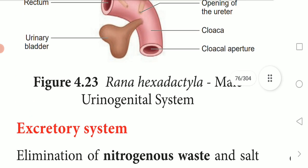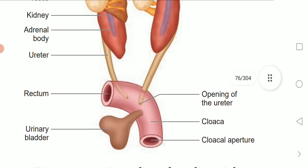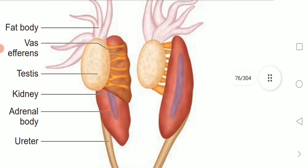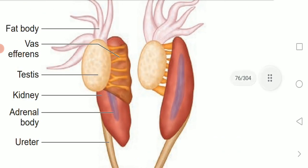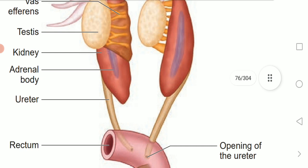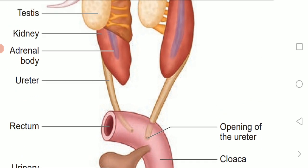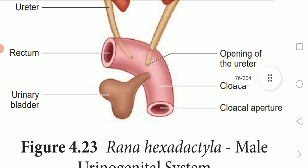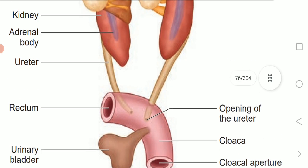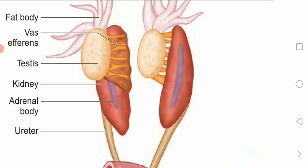The next topic is the reproductive system. This part is called the reproductive system. The testes, vas efferentia, fat bodies, adrenal gland, and ureter are the parts used in the male reproductive system. Male frog has a pair of testes, and the testes are attached to the kidney.